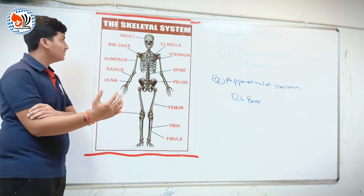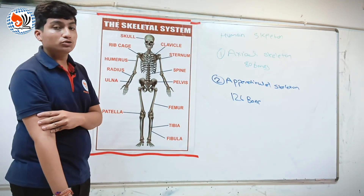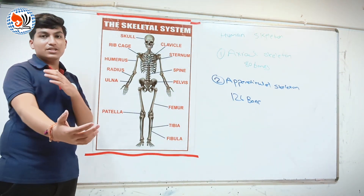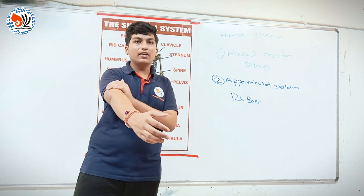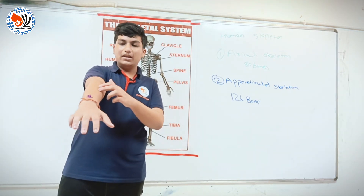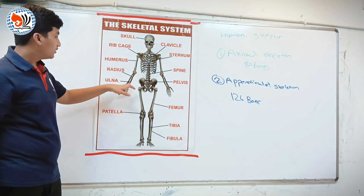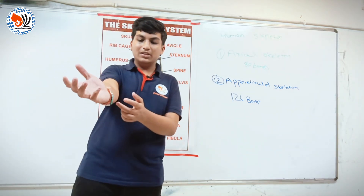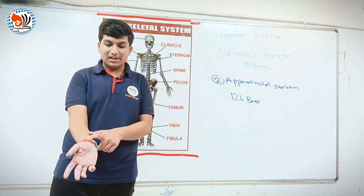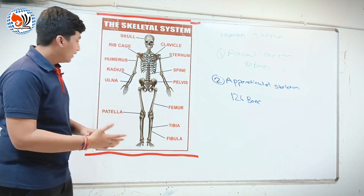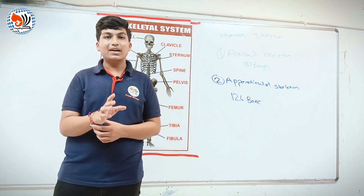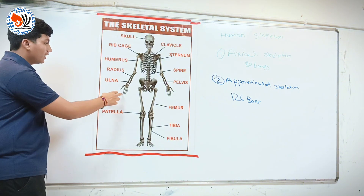In our hands there are a total of 30 bones. First is humerus, present here in our body. Second is radius, present here in our hand. Third is ulna, present in this part of our hand. Next, there are 7 carpals in our hand. Next, there are 5 metacarpals in our hand.